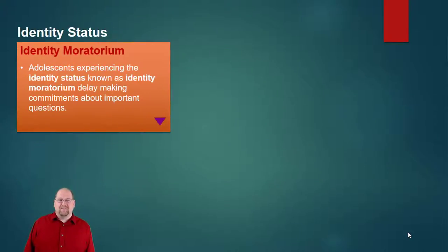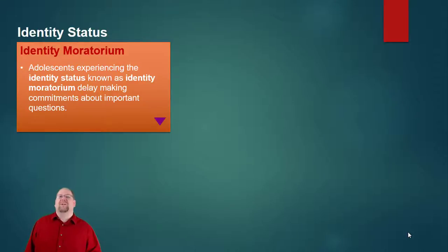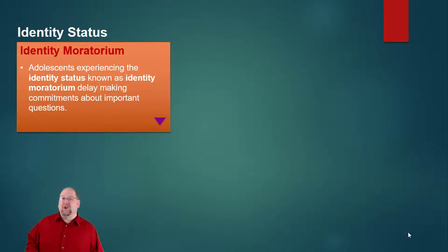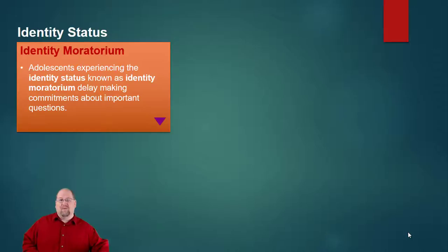Identity moratorium is when adolescents are exploring their identity status but delaying their commitments about these questions. They don't know what direction they want to go, so they're in a lull — sitting back and not really moving out of that comfort zone. This often happens when people are indecisive about all their choices; they choose not to make a choice or even look at the choices. People are scared about change, but eventually adolescents do move out of identity moratorium onto other stages — sometimes more than one stage, sometimes only one or two.